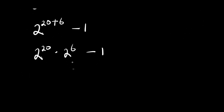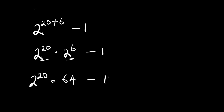Now, 2 to the power of 6 is simply 64 — that is 2 times 2 times 2 times 2 times 2 times 2. So we have 2 to the power of 20 times 64, minus 1.